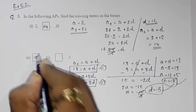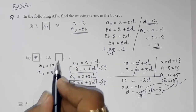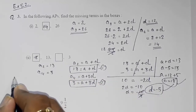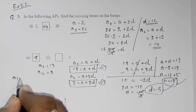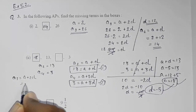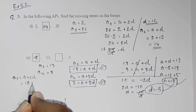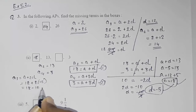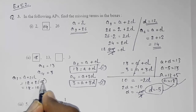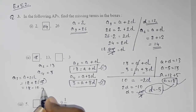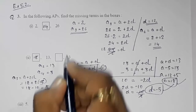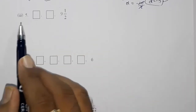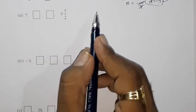Now we find the third term: a3 = a + 2d = 18 + 2 × (−5) = 18 − 10 = 8. So the third term is 8. This is how you solve part two.